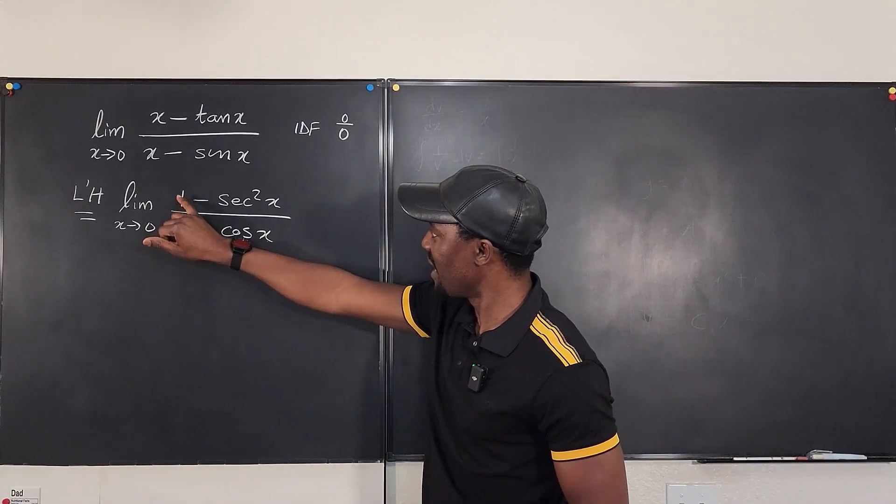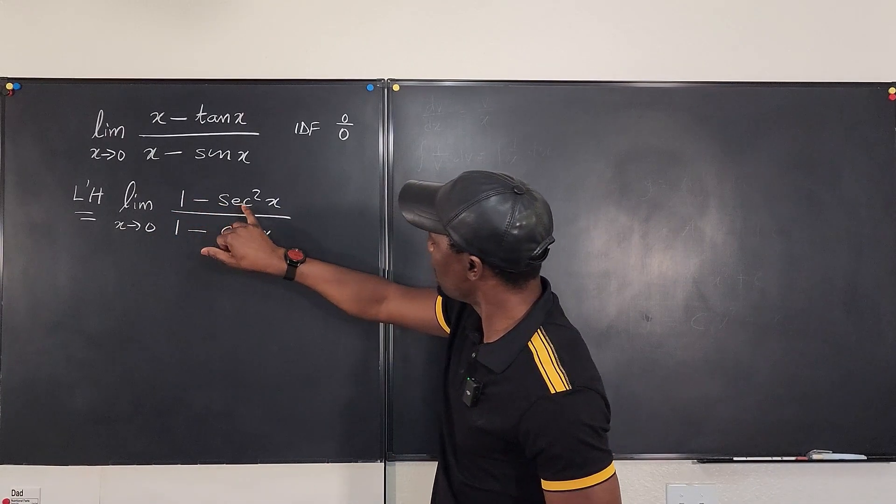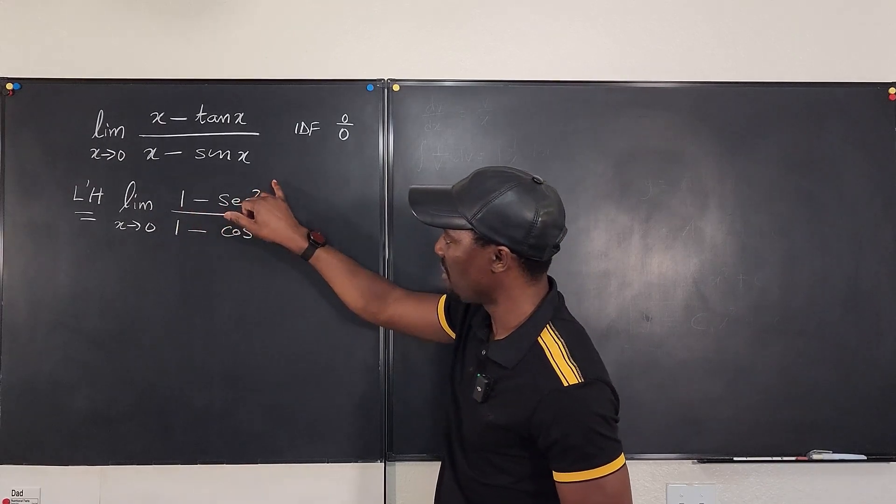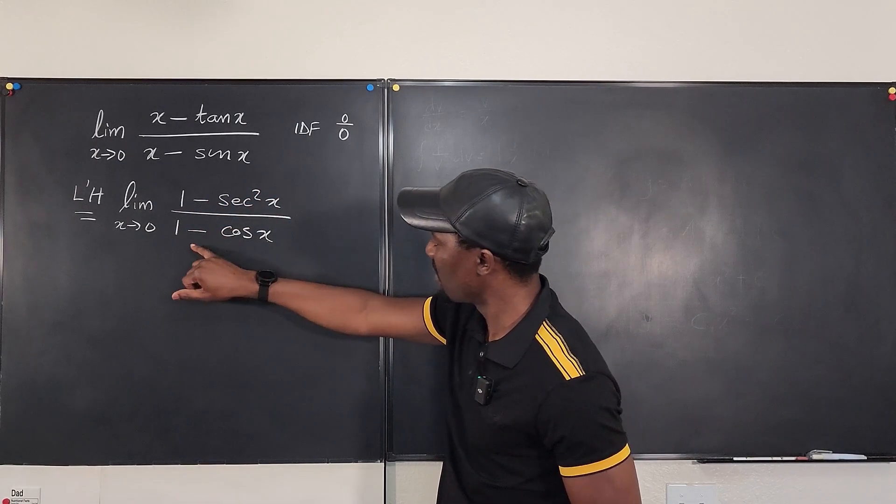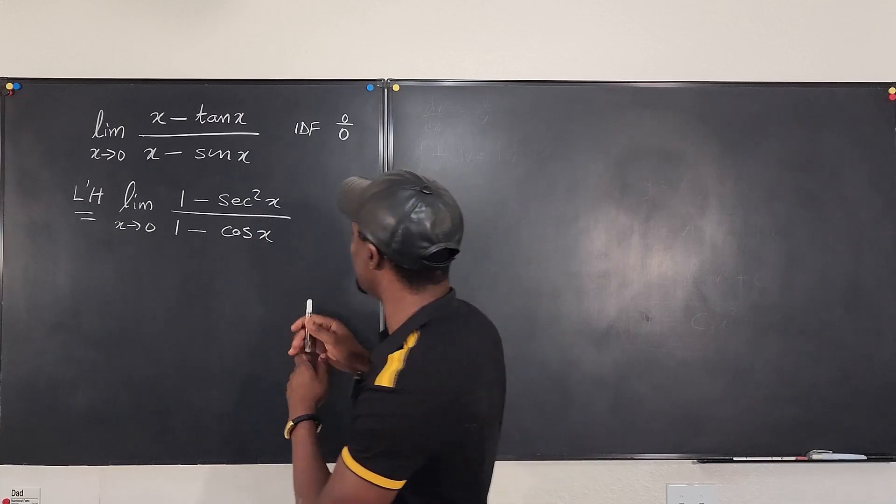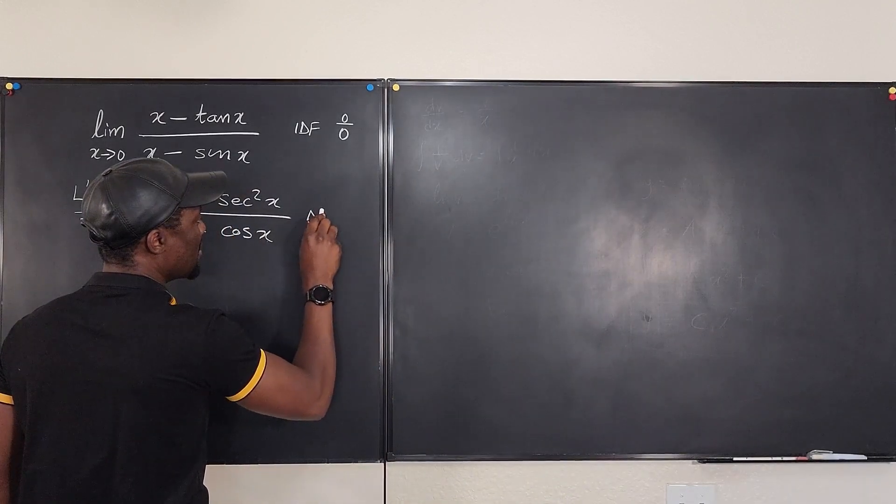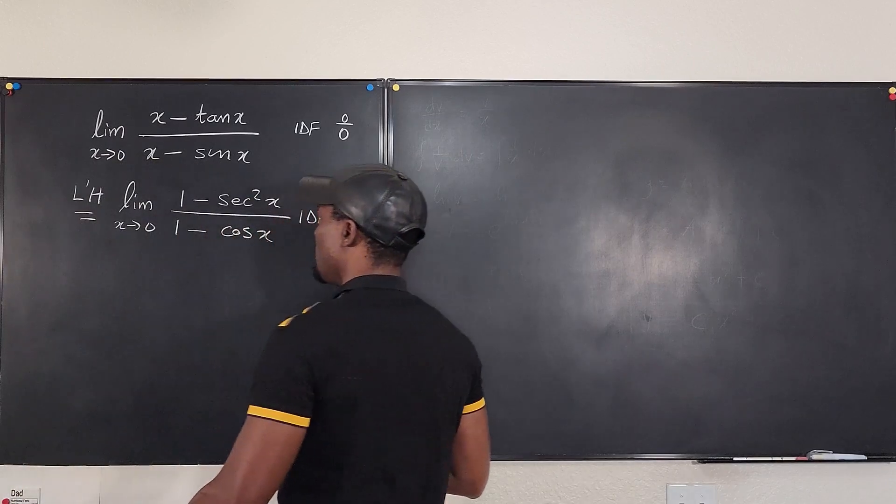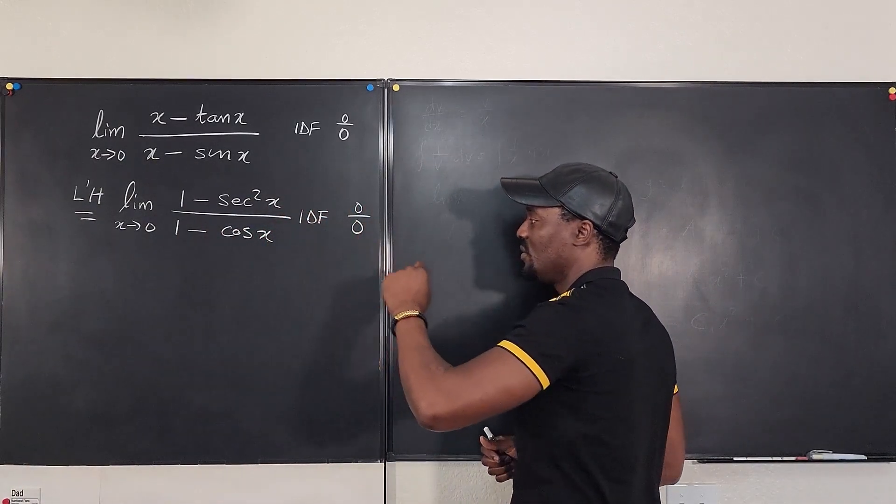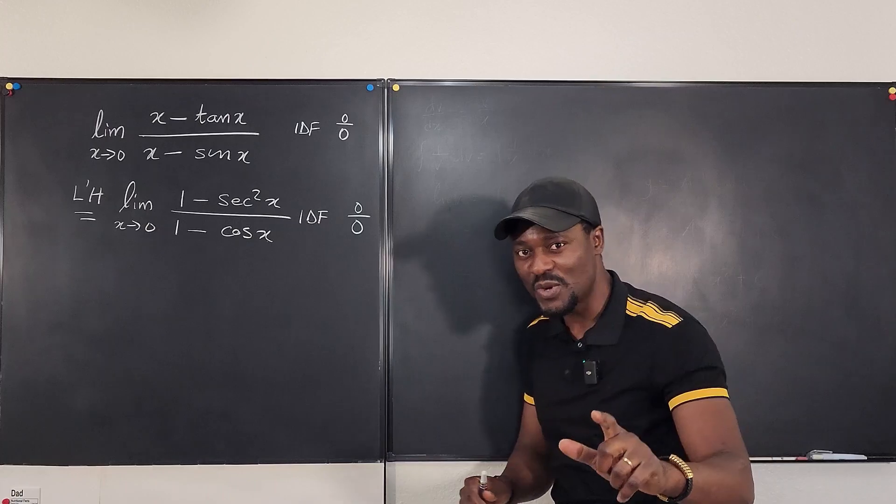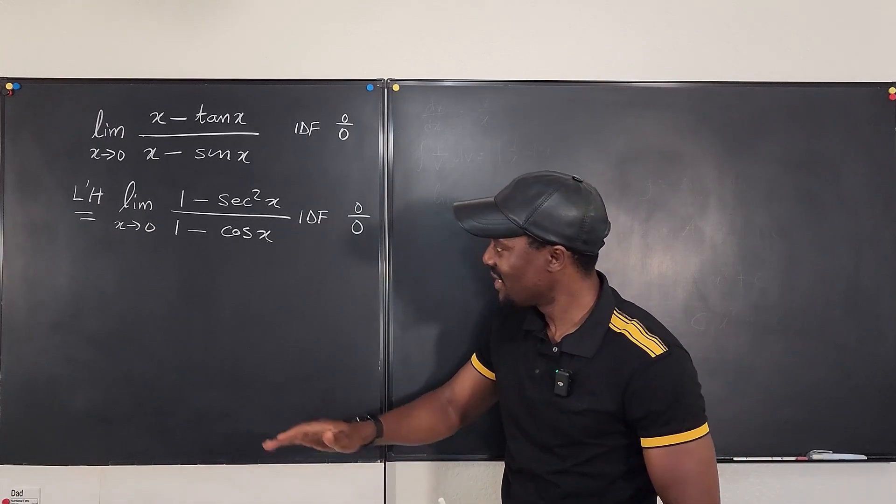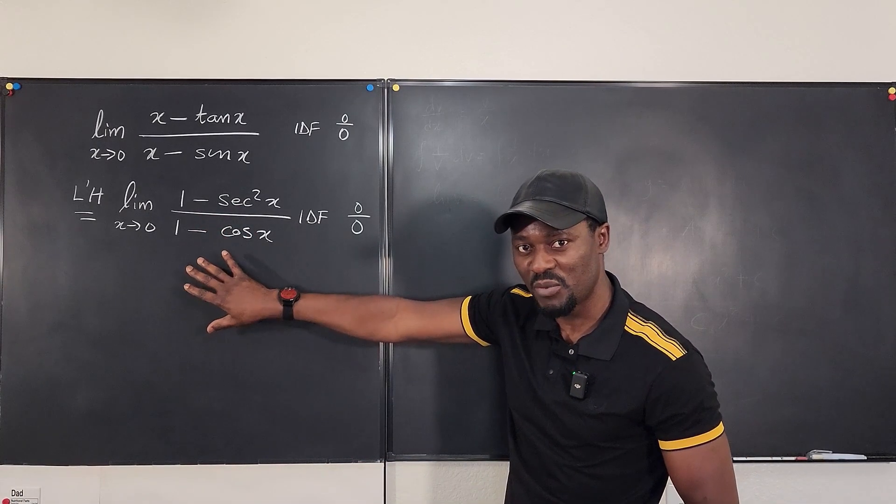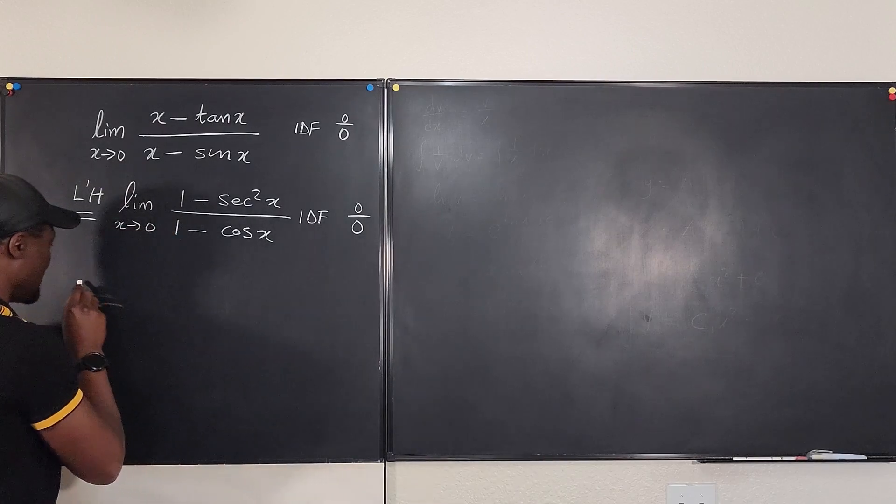If I plug in 0, I get 1 minus secant squared 0 which is 1 minus 1 and this is 1 minus 1, that's still an indeterminate form, indeterminate form 0 over 0. So this still guarantees that we could use L'Hopital's rule but that way it becomes crazy because taking these derivatives will become more and more complicated. So let's do L'Hopital's rule again.